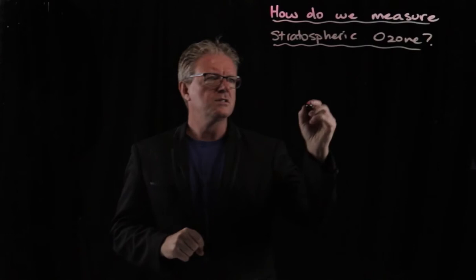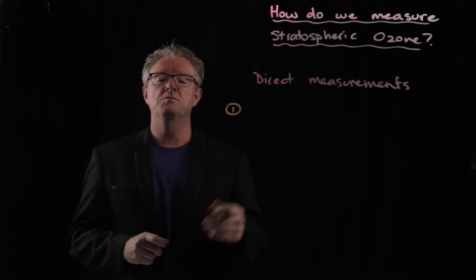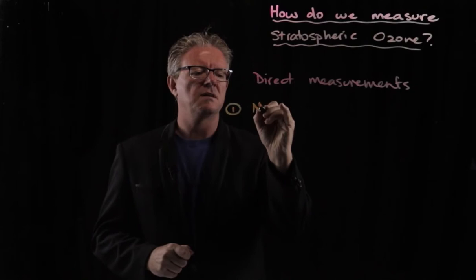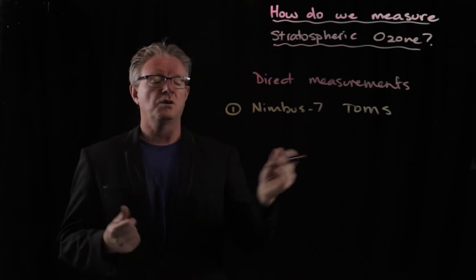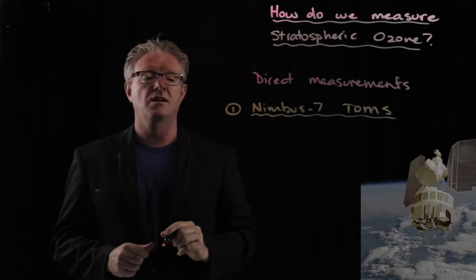Well, the first thing is we talk about direct measurements. The first one is using spectrometers that are up in satellites. There are multiple spectrometers being used by different satellites, but the one that's easiest to remember is the Nimbus 7. The Nimbus 7 is the satellite on which this device is placed. It's called the Total Ozone Mapping Spectrometer, or TOMS. The spectrometer is on other satellites, but the Nimbus 7 is the one we're going to be looking at.